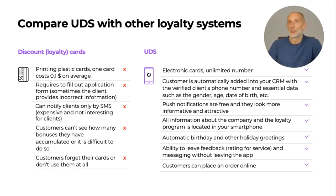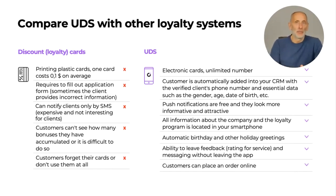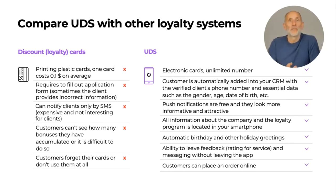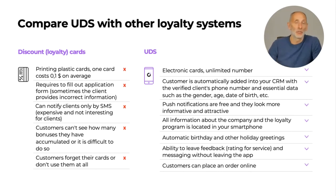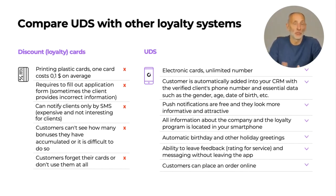With the UDS app, you don't need any plastic or printed loyalty cards and your customer data is acquired automatically. With UDS you can send push notifications, which is a much more preferred way of communicating with businesses today, and these push notifications are more functional than plain text SMS messages. You can attach images to push notifications, which you can't do with SMS. Your customers can see all the necessary information about your company, products, and their bonus points within your UDS app profile.